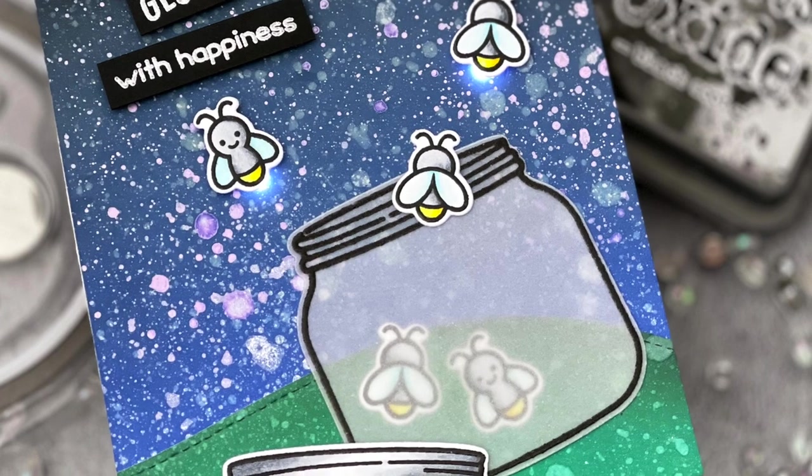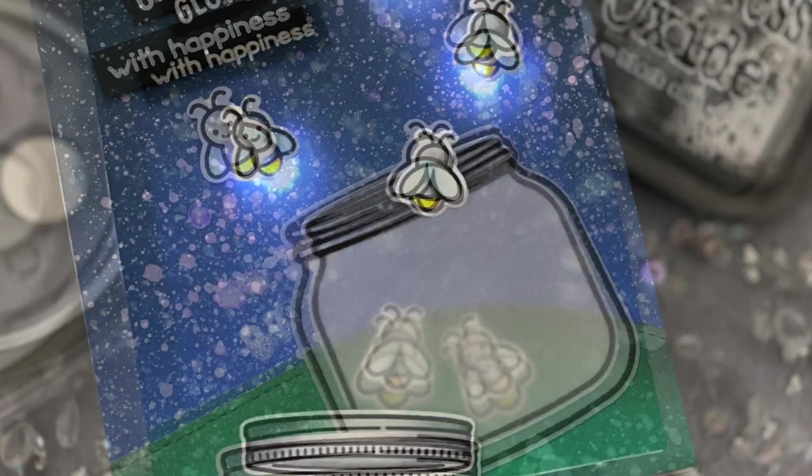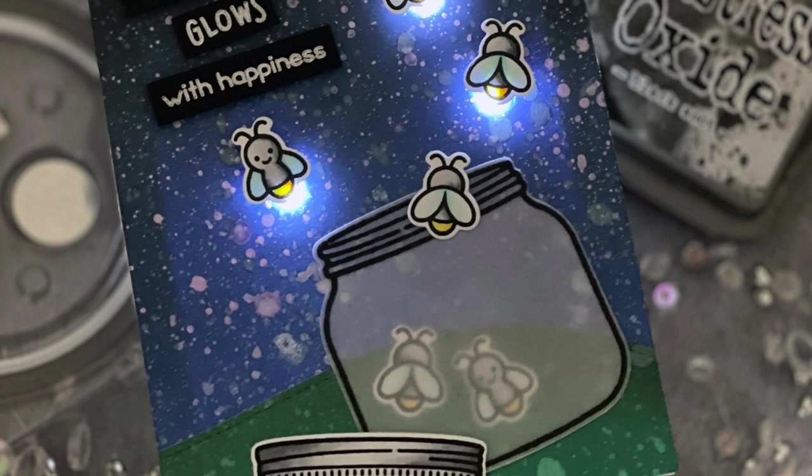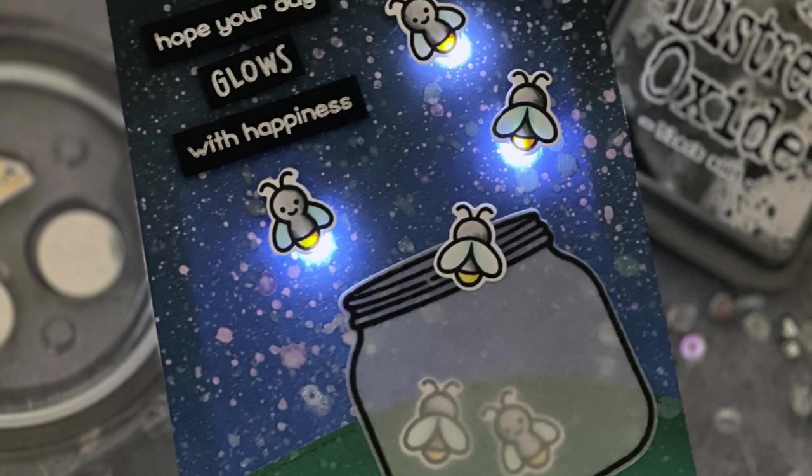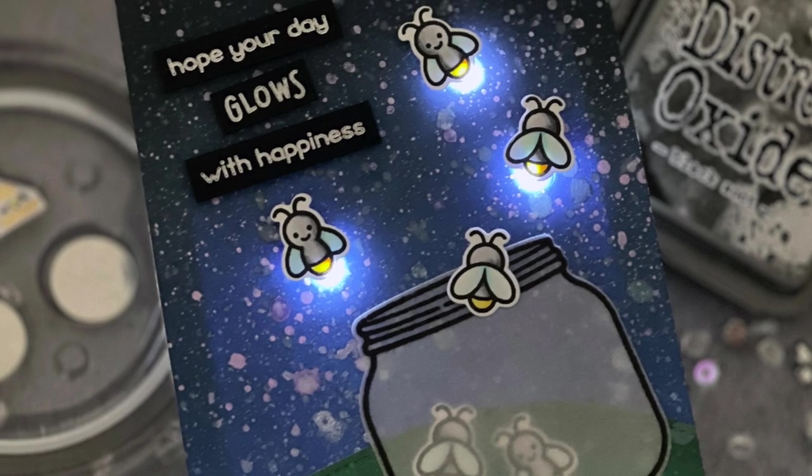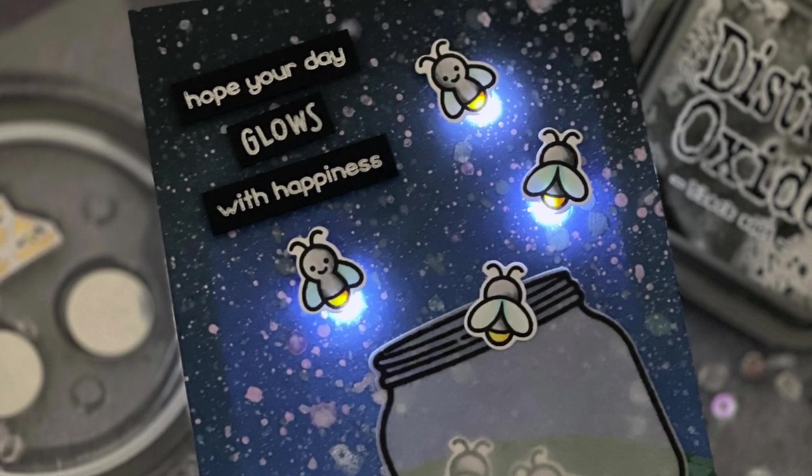As I mentioned in the last video, creating a circuit is as simple as connecting the positive side of the LED sticker to the positive side of a battery, and the negative point of the LED sticker to the negative side of a battery using fabric tape. When we add more lights, we follow the same strategy.